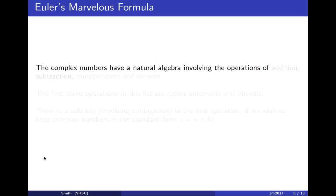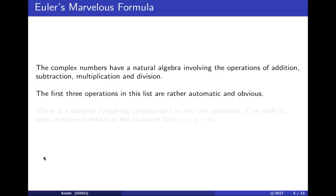The complex numbers have a natural algebra involving addition, subtraction, multiplication, and division. The first three operations are rather obvious and automatic. There is a subtlety when we do division if we're trying to express the result in rectangular form a + bi.